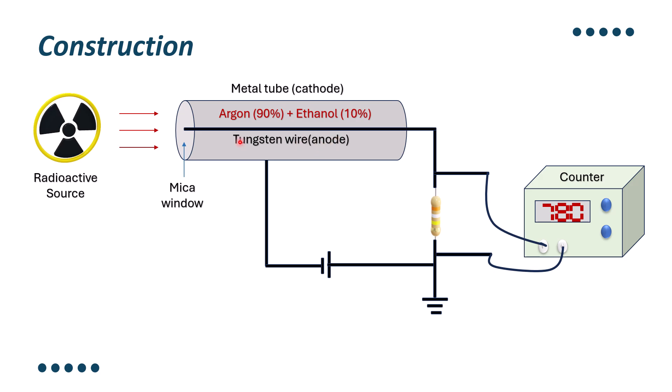The negative terminal of this battery is connected to the metal tube and the fine tungsten wire is connected to the positive terminal wire resistance R as you may see in the figure. The direct current voltage is kept slightly less than that which will cause a discharge between the electrodes.